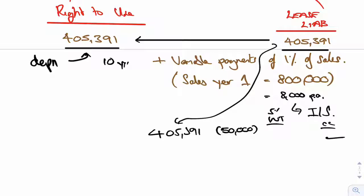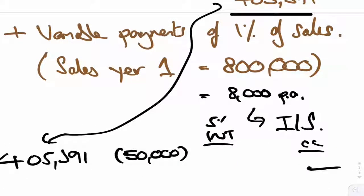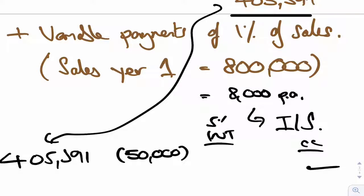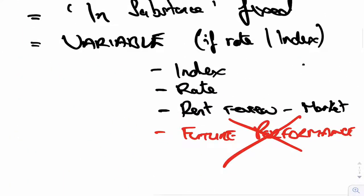But my point really of this whole thing is, anything that's based on the future performance of the assets, put it to the income statement. The only variable payments you put to the lease liability are index, rate, rent review in the future, not initially.